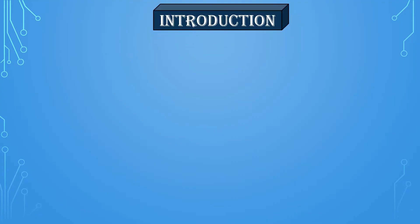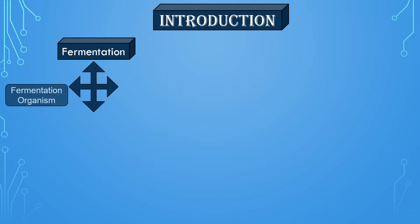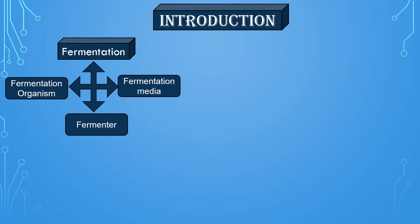Introduction. Whenever we talk about the fermentation process, whether the process is carried out on a laboratory scale or an industrial scale, there are three important basic requirements: fermentation organism, fermenter, and fermentation media. Here we are going to talk about fermentation media.